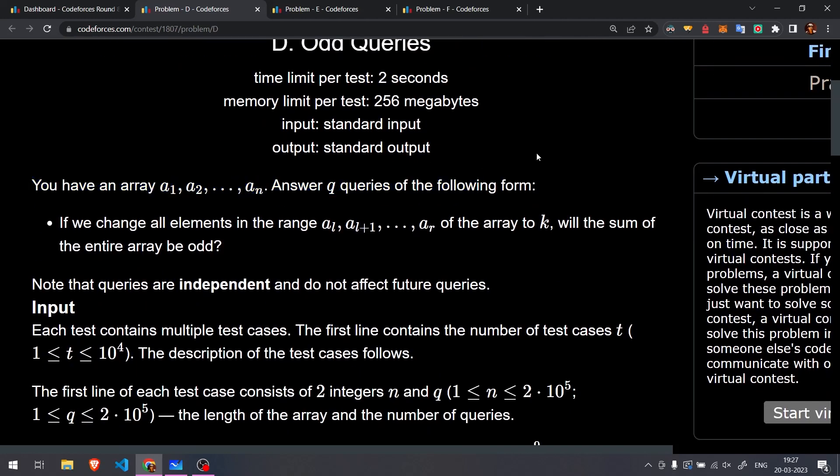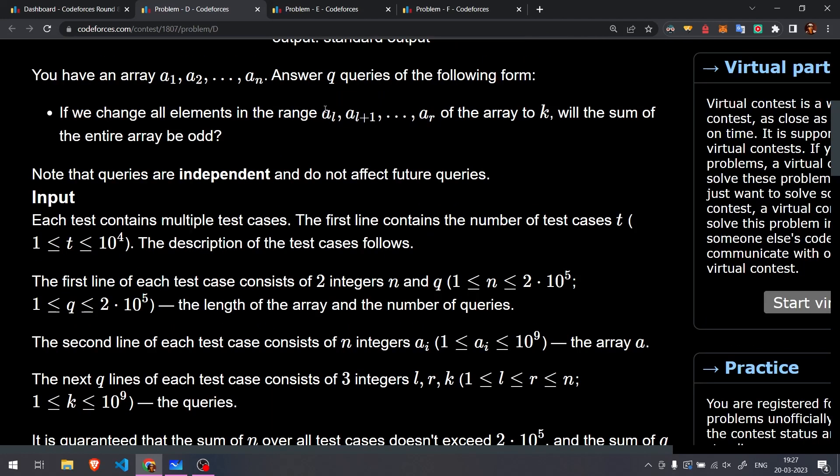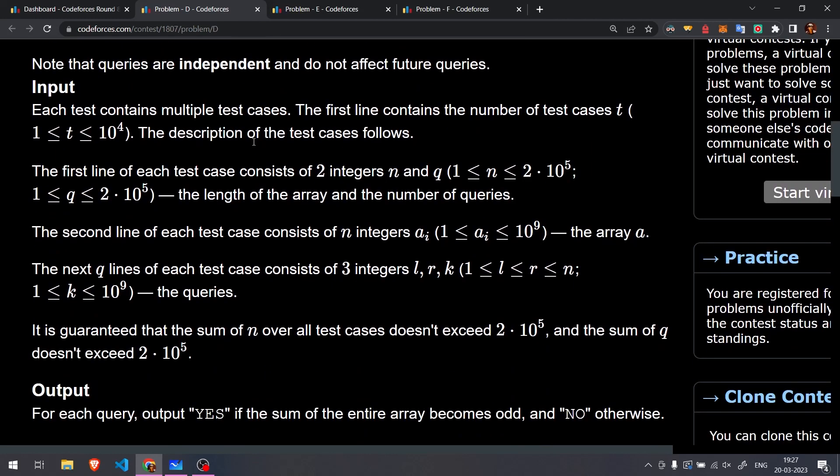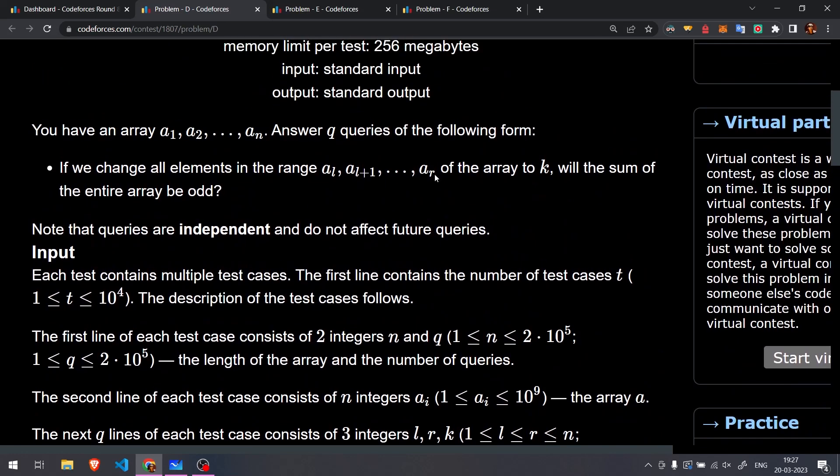So we are given an array and we have been given some queries which are to be performed on a certain range, say from L to R. Basically we have to replace all of the elements from L to R with the number K and we have to check that after this operation, will the sum of the entire array be odd?